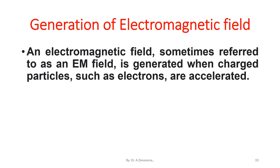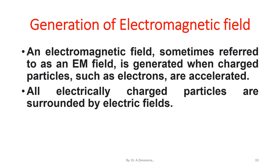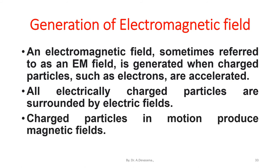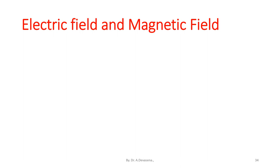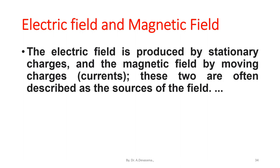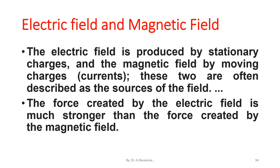Generation of an electromagnetic field: an electromagnetic field, sometimes referred to as an EM field, is generated when charged particles such as electrons are accelerated. All electrically charged particles are surrounded by electric fields. Charged particles in motion produce magnetic fields. The electric field is produced by stationary charges and the magnetic field by moving charges, that is currents. These two are often described as the sources of the field.